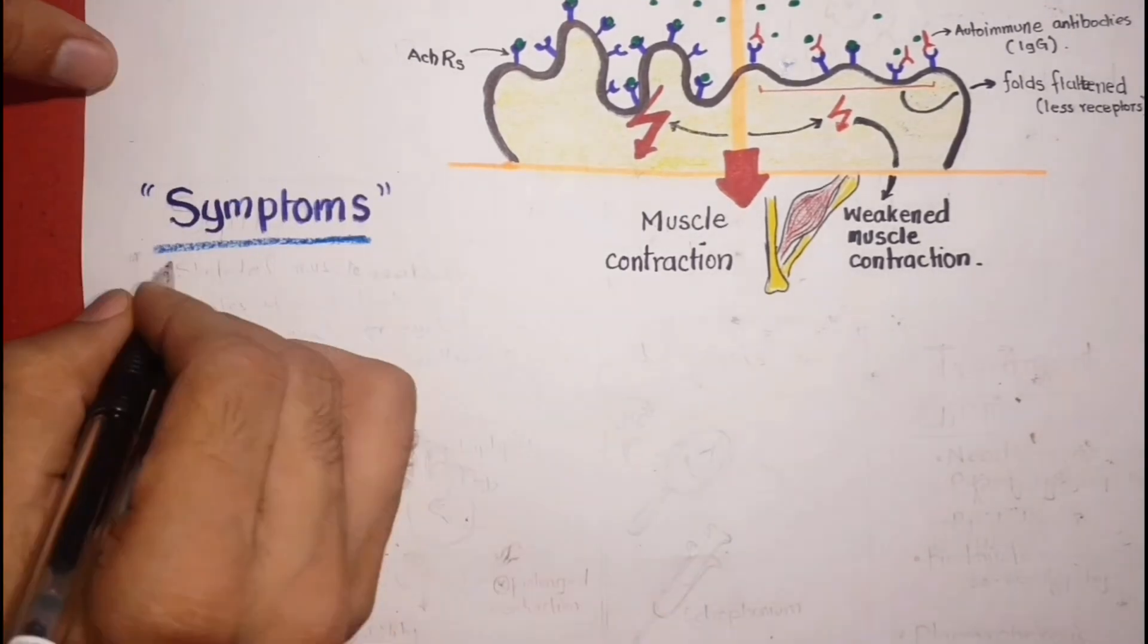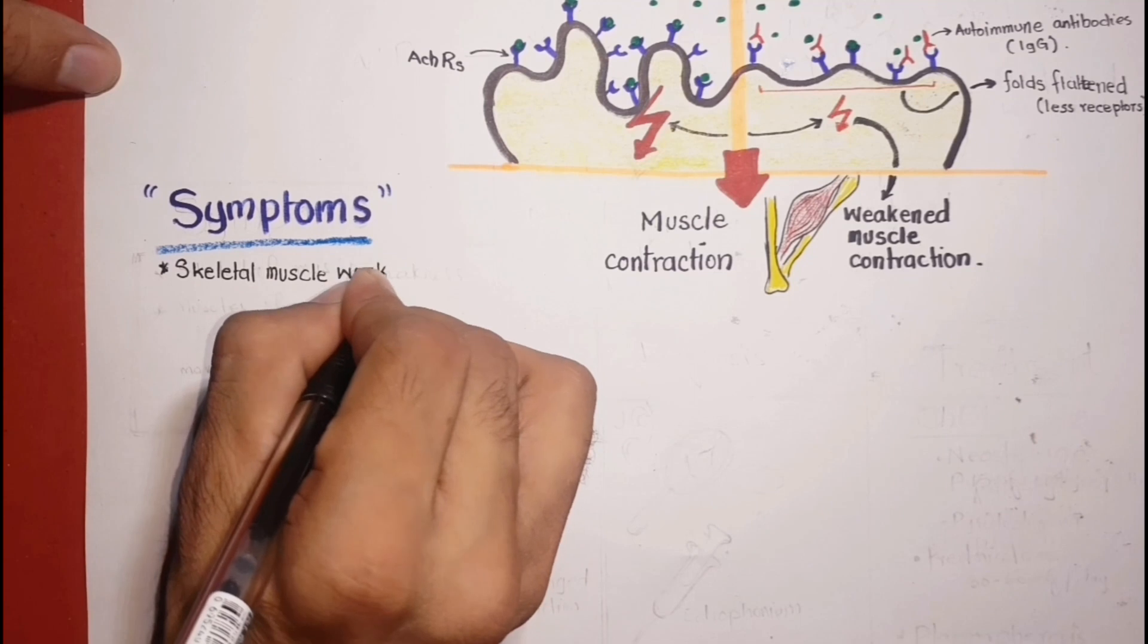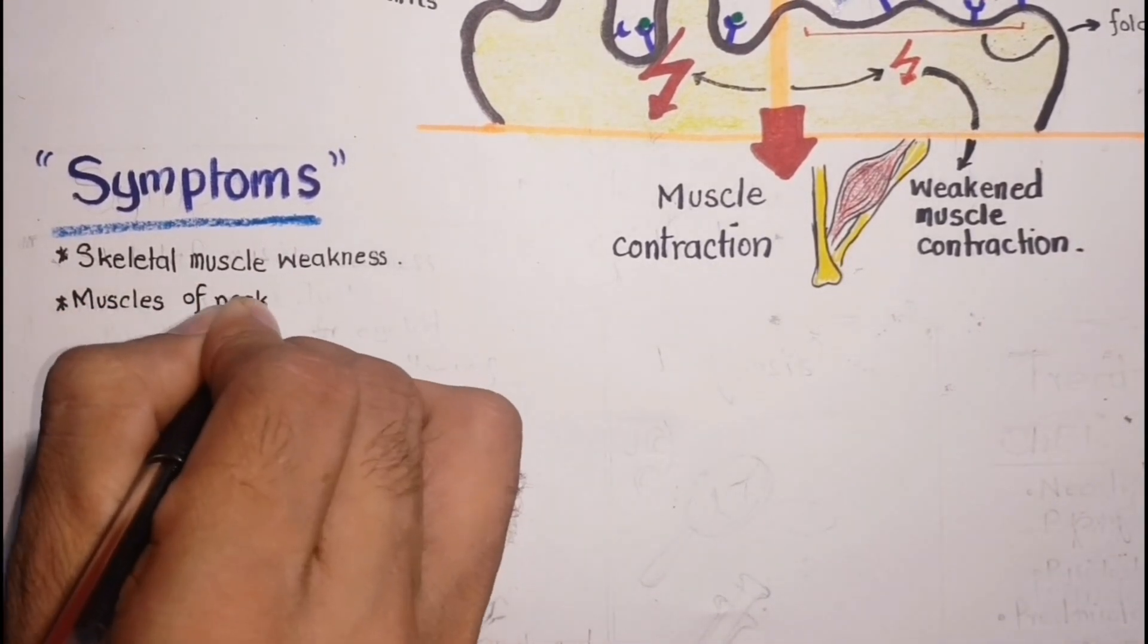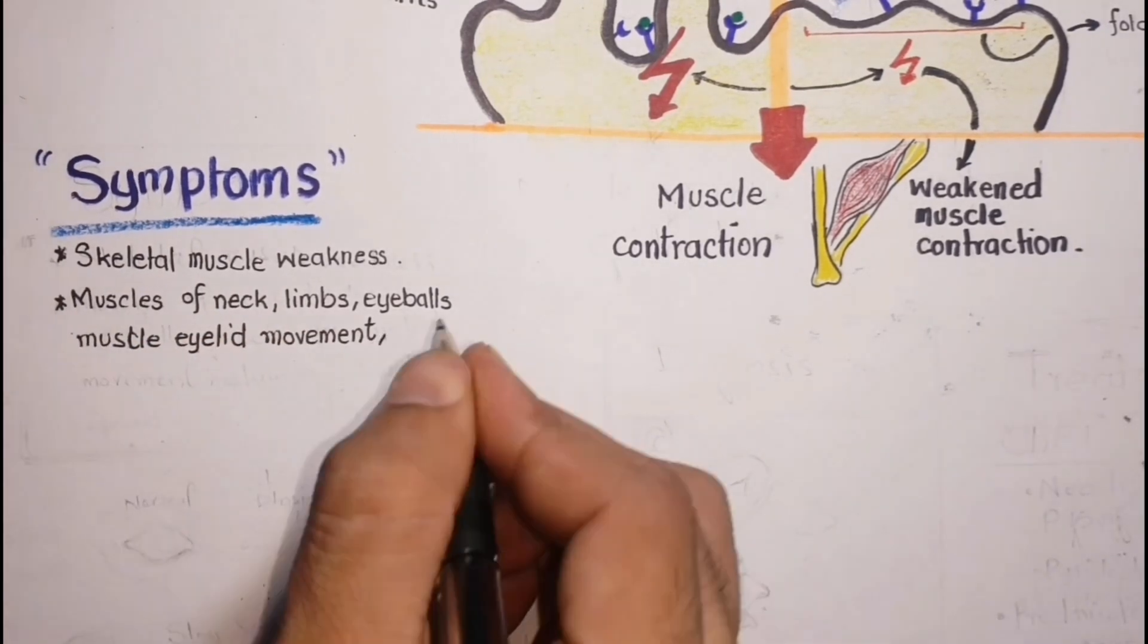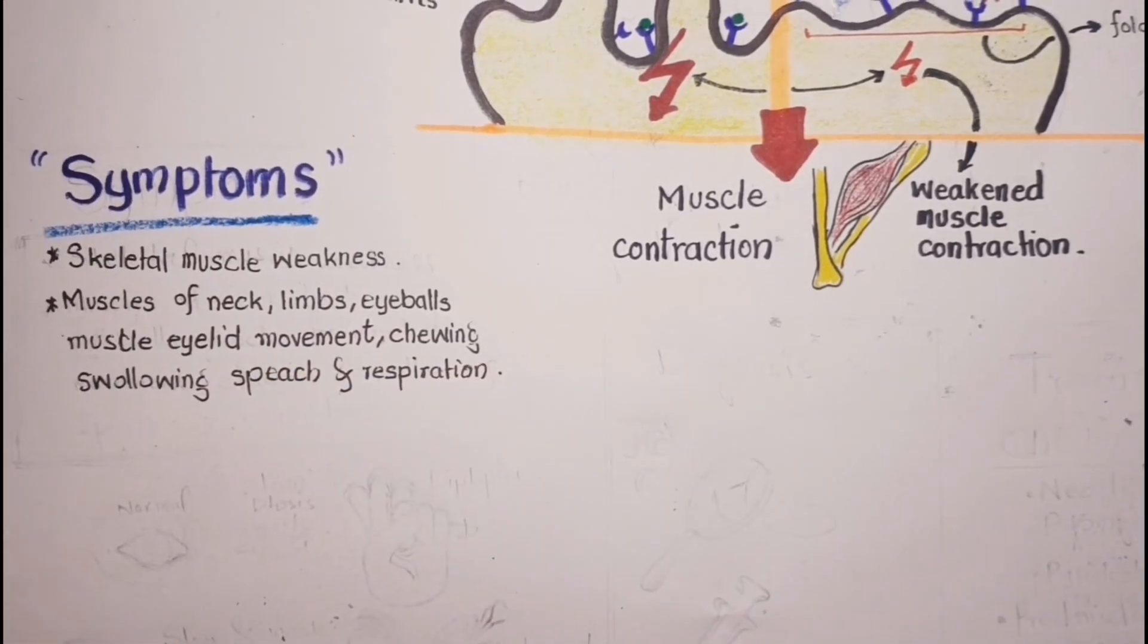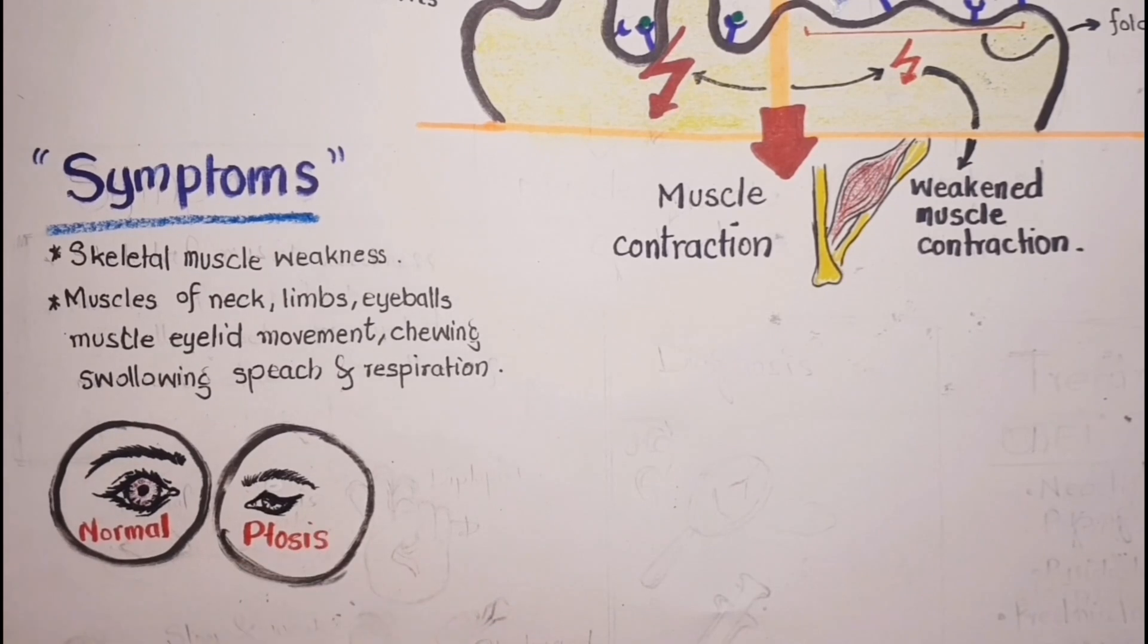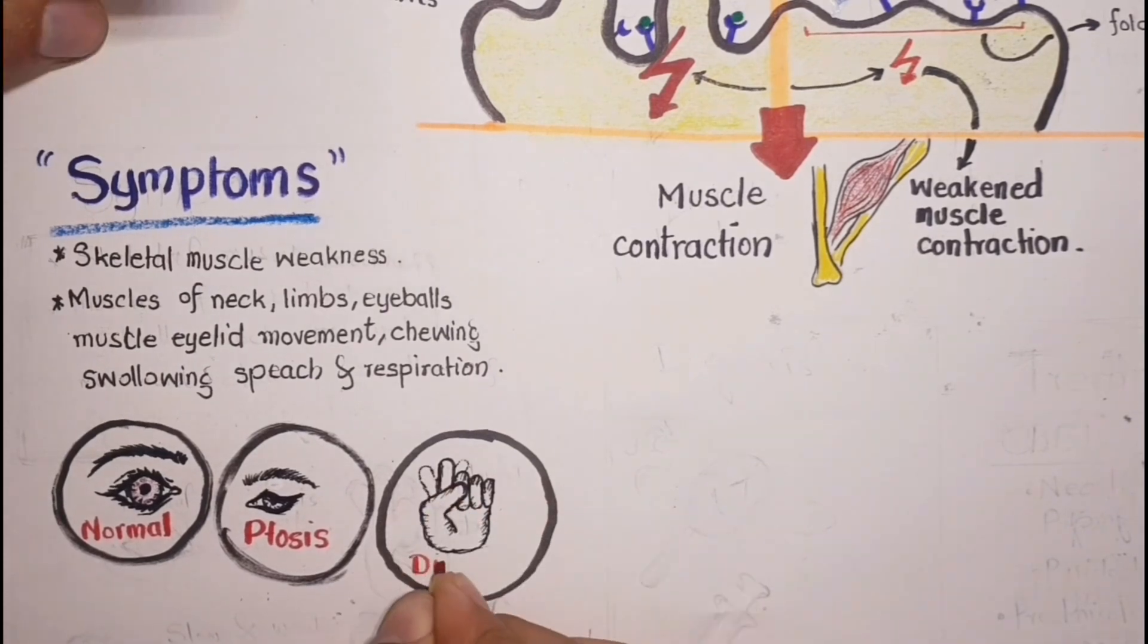The symptoms of myasthenia gravis are associated with skeletal muscle weakness mainly. The muscles which are more susceptible are the muscles of neck, limbs, eyeballs, and the muscles which are responsible for eyelid movements, chewing, swallowing, speech, and respiration. Typically weakness begins with extraocular muscles causing drooping eyelids or ptosis and double vision or diplopia.